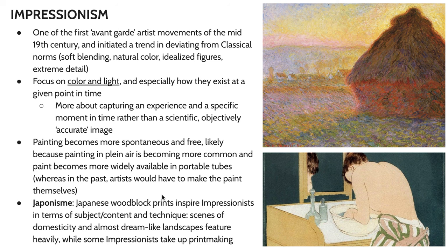Impressionism is one of the first avant-garde movements emerging out of the mid-19th century, and it was a real catalyst in a collection of movements deviating from classical norms — which involved soft blending, soft transitions between colors and shades, sfumato, idealized figures, and hyper-detail. What's super cool about Impressionist paintings is that from far away they're very cohesive and recognizable, but when you walk up close, the details become obscured. Think of it like a color printer: when you zoom in very close it doesn't make sense, but when you step back the big picture comes together.